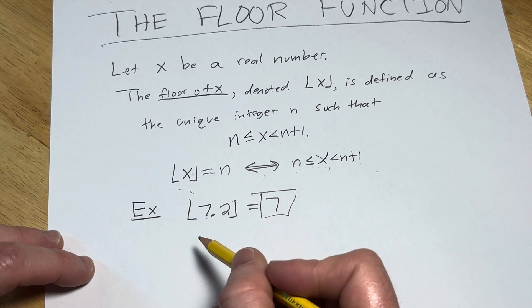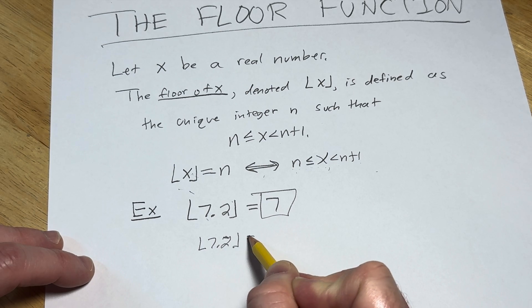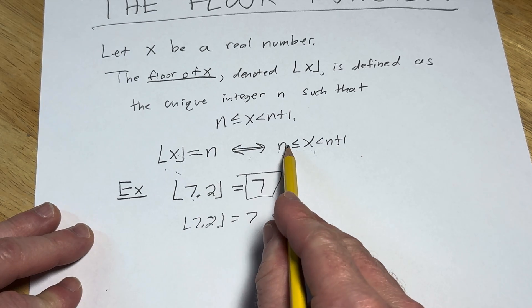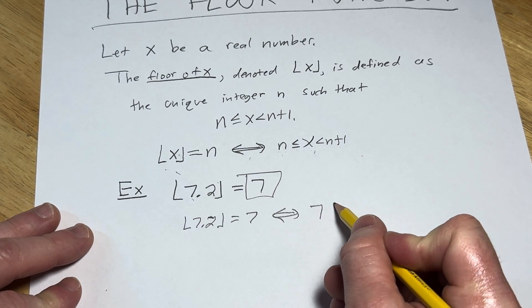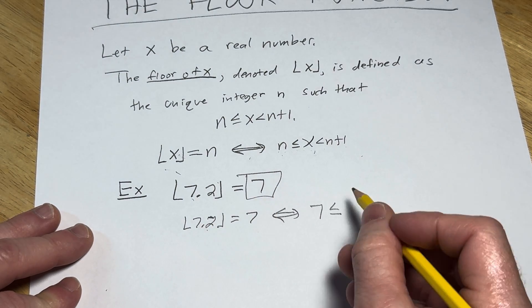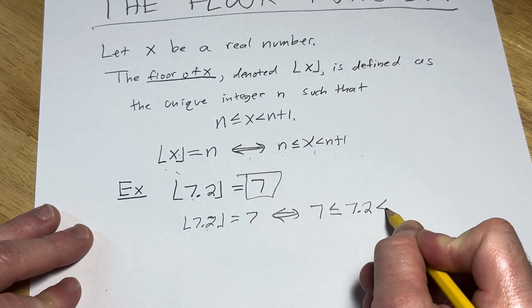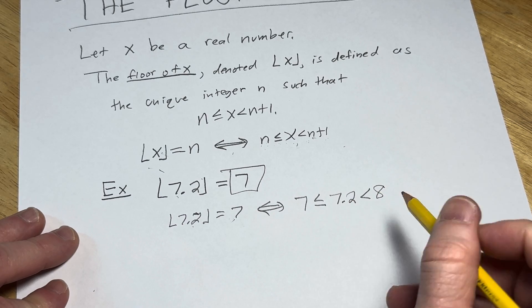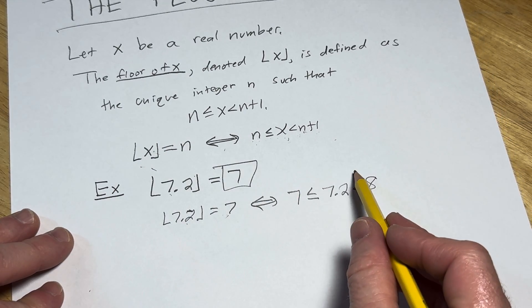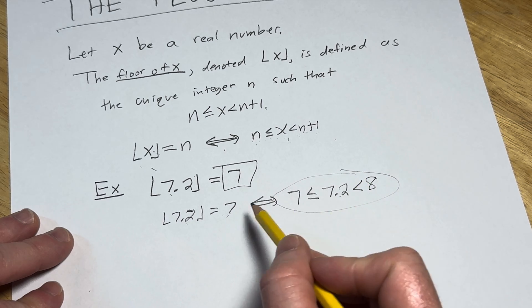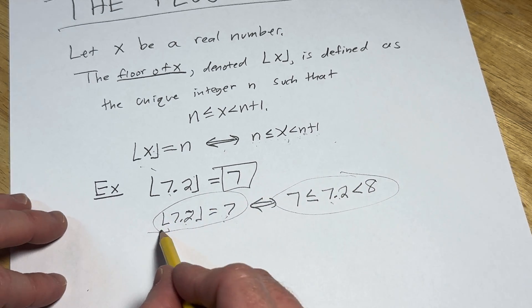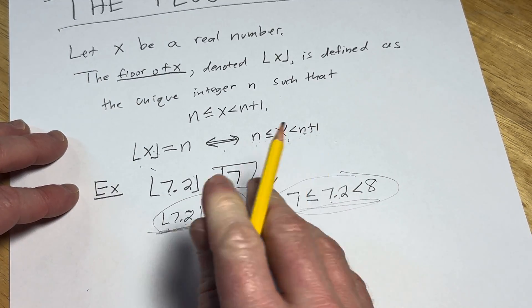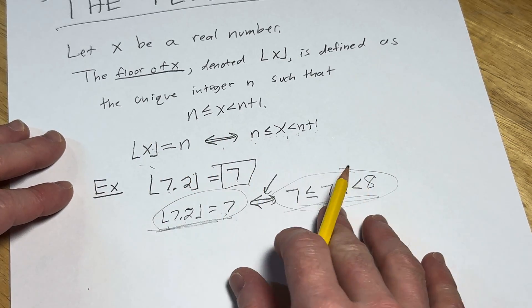Let's use the formula and apply it to this if and only if statement. The floor of 7.2 is 7 is equivalent to saying, using this, our n here is 7, so it's going to be 7 ≤ 7.2 < 8. So because this is true, then the floor of 7.2 is going to be 7. If this is true, then this is true. This is called a double implication. These are called equivalent statements.